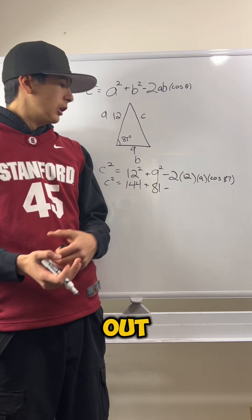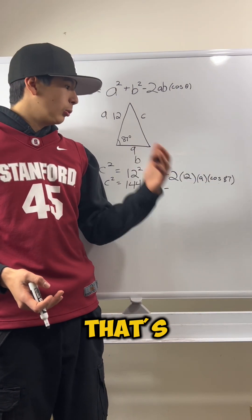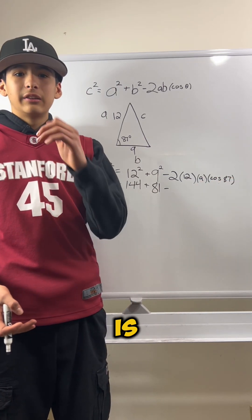We're going to multiply these three out. So 2 times 12, that's 24. 24 times 9 is 216.